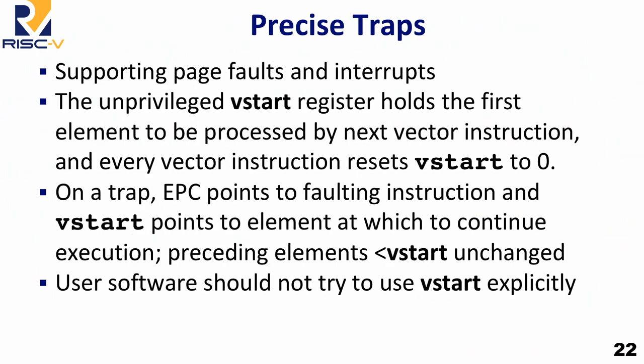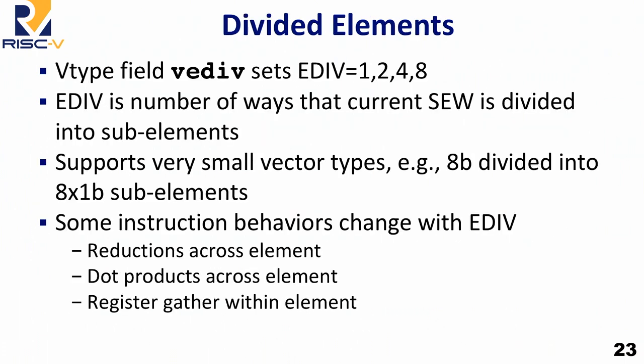For precise traps, the model is that when you trap on a vector instruction, you resume at an element position — so it's precise to the element within an instruction. This removes the need to restart the full instruction from the beginning; a scatter-gather would otherwise need hundreds of elements in the TLB to ensure it could complete. We have a progress guarantee — you go forward and complete. EDIV is the idea of dividing elements into 1, 2, 4, or 8 sub-elements, giving a primitive form of 2D operations and supporting very narrow sub-elements.